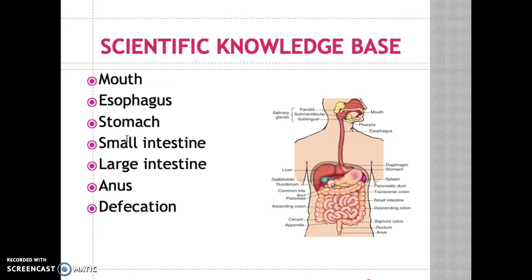Peristalsis, digestion, and absorption occur in the small intestine. The large intestine consists of the cecum, ascending and descending colon. The function of the anus is to expel feces and flatus, which is gas, from the rectum through the anus. Defecation occurs through the external sphincter muscle when it relaxes and the abdominal muscle contracts.